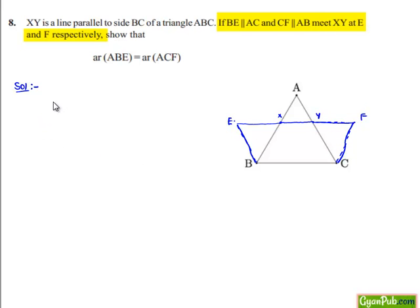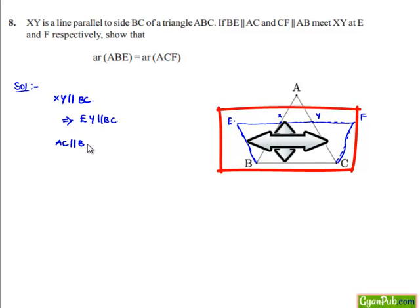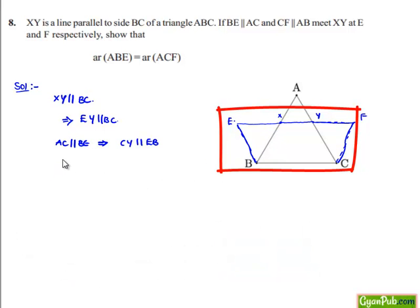It is given that XY is parallel to BC. Now let us consider quadrilateral BCYE. We know that XY is parallel to BC, which implies EY is also parallel to BC. It is also given that BE is parallel to AC, which implies CY is parallel to EB. Therefore, in quadrilateral BCYE, two opposite pairs of lines are parallel.